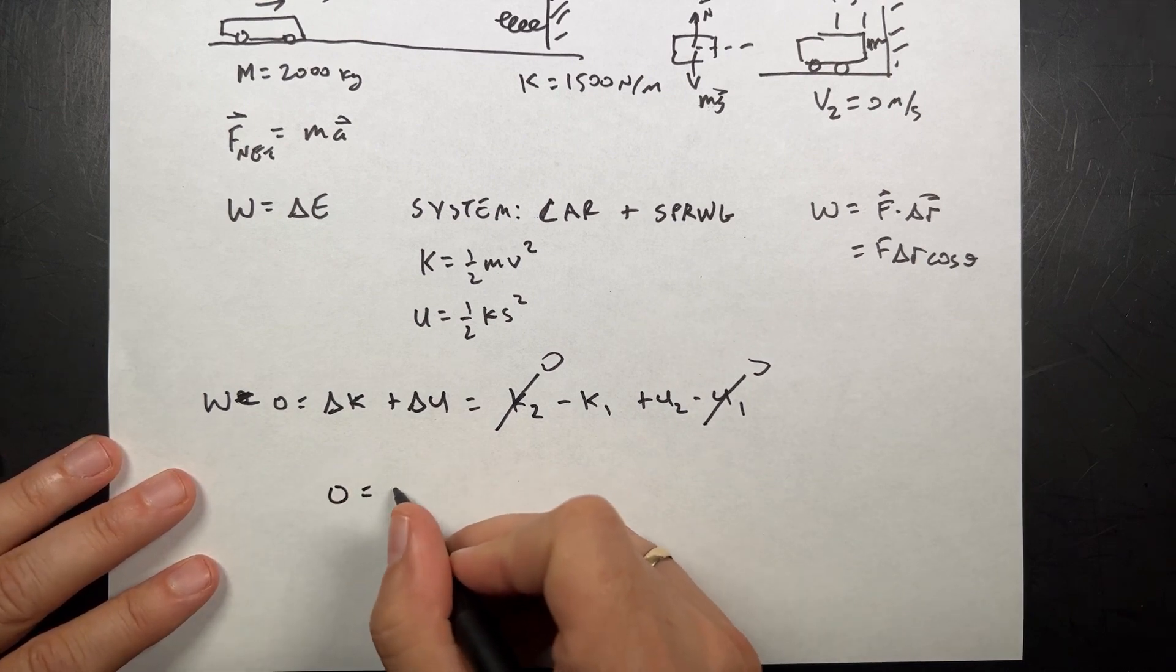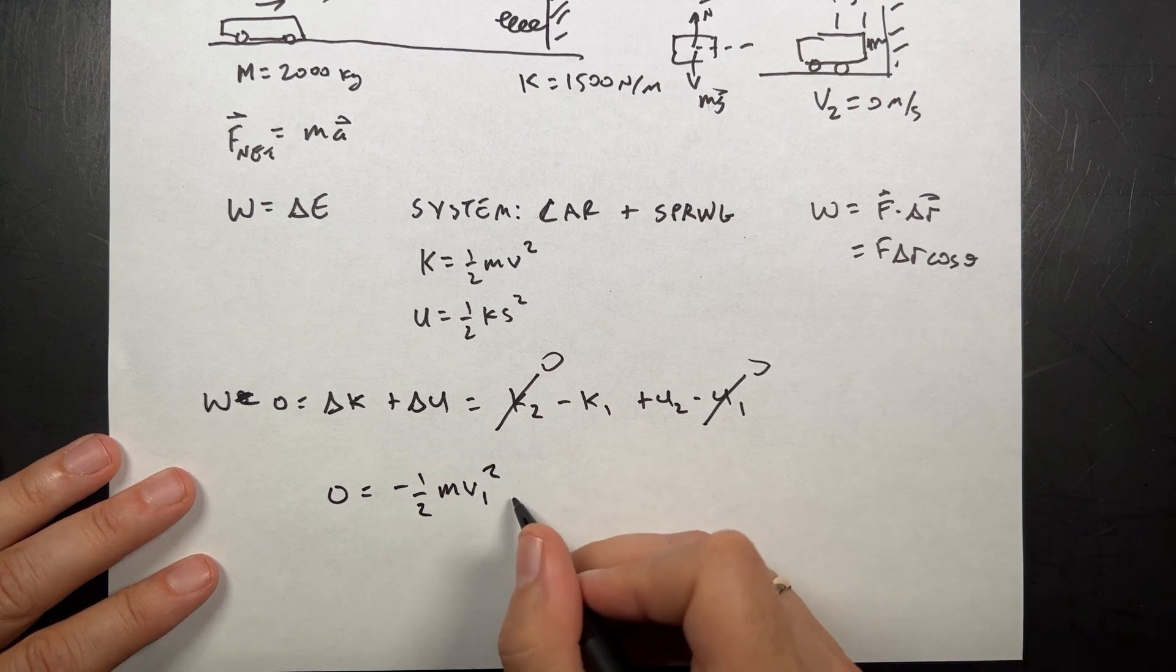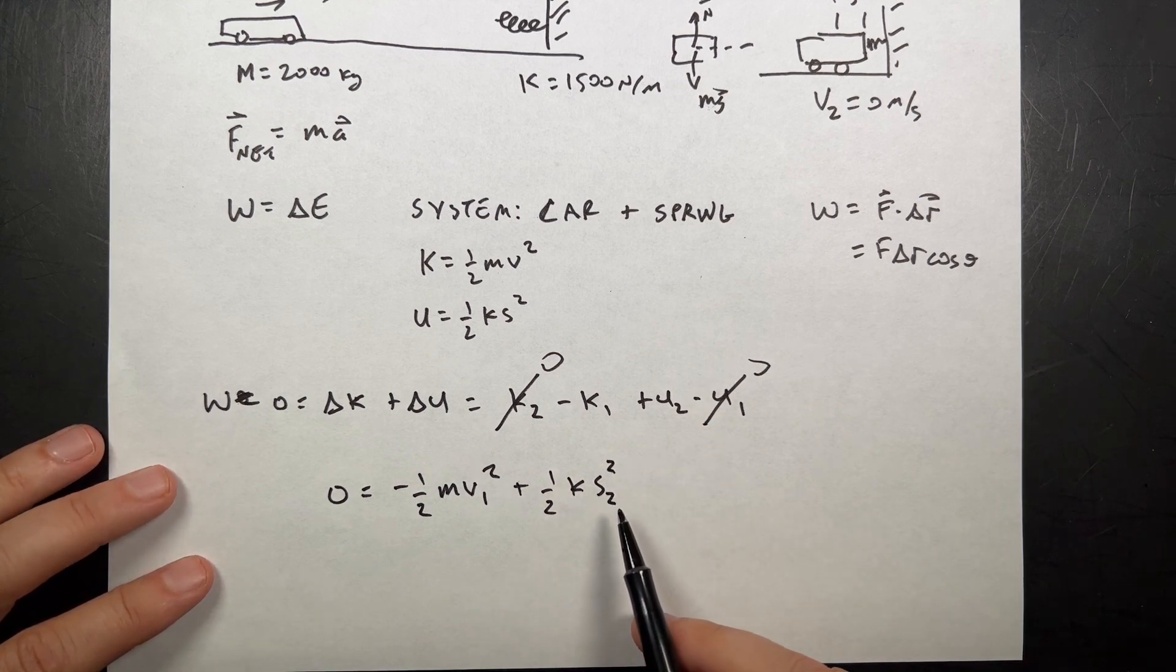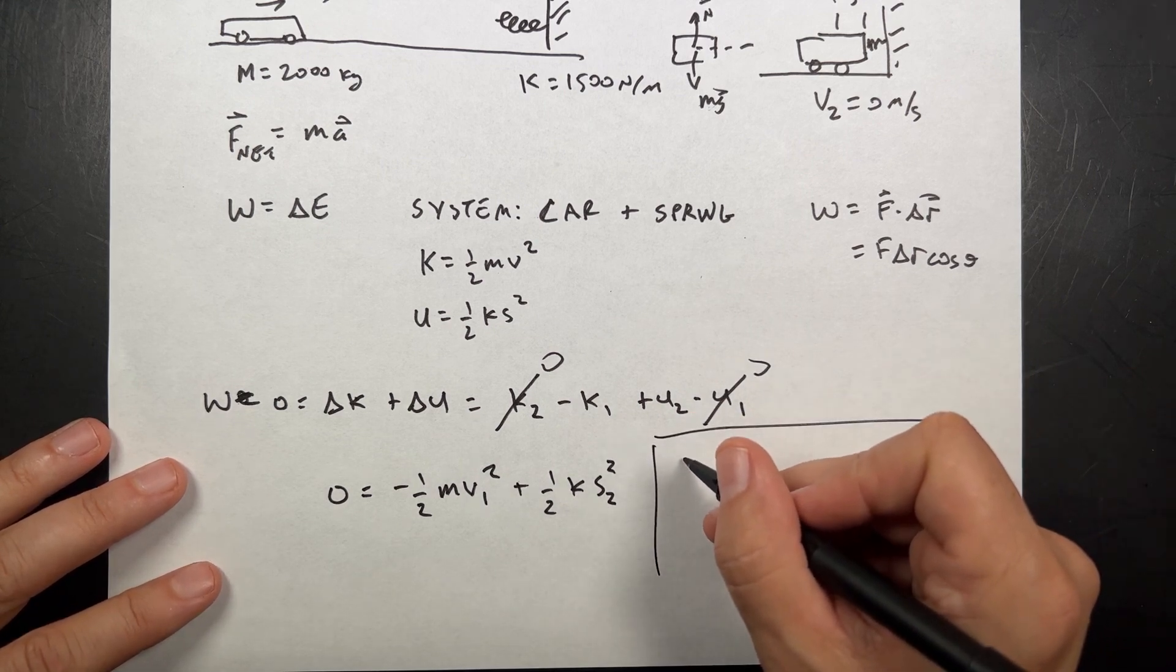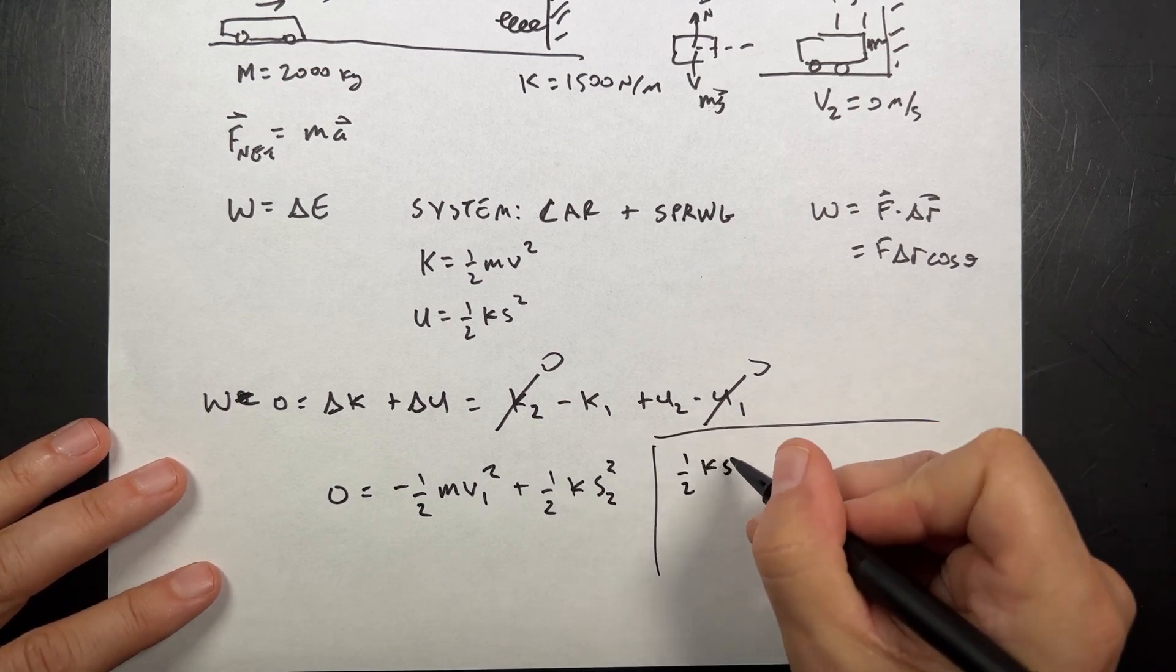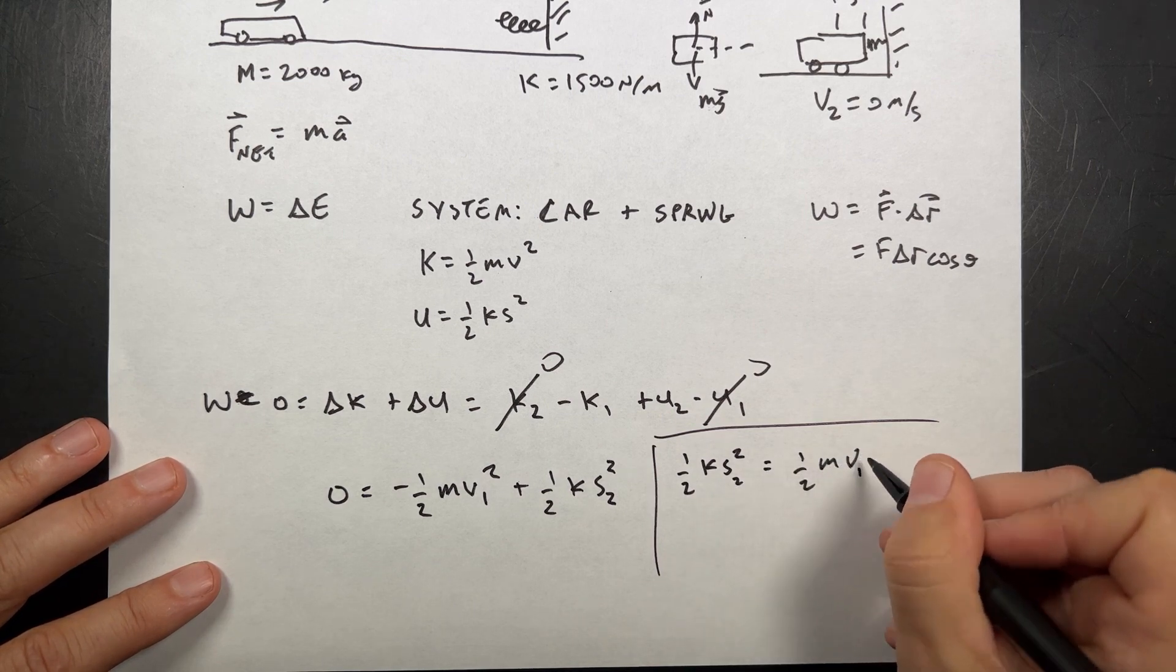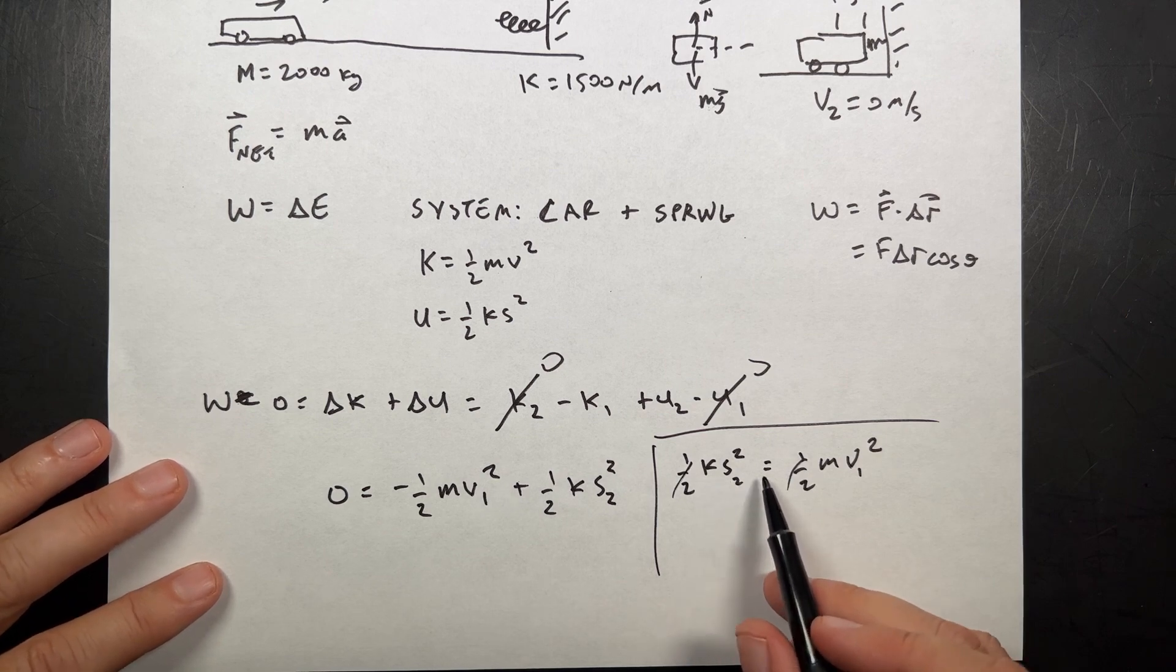Zero equals negative one-half m v1 squared plus one-half k, I'll call this s2 squared. That's the compression at position two. And I want to solve for s, so I'm going to add that to both sides. And I'm running out of room, but I can do this. I get one-half k s2 squared equals one-half m v1 squared. The one-halves cancel.